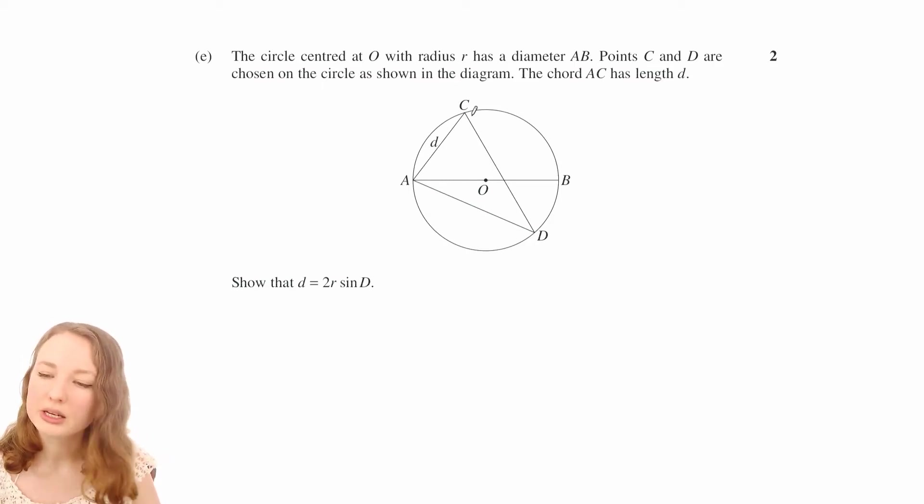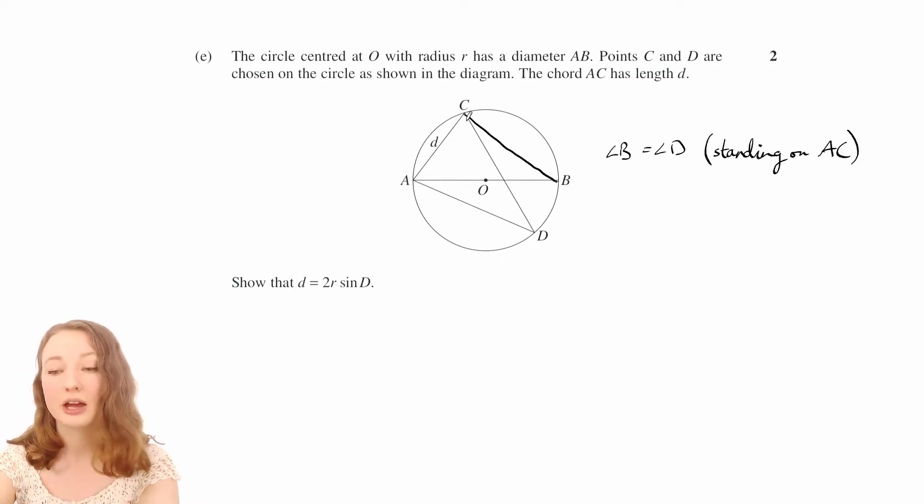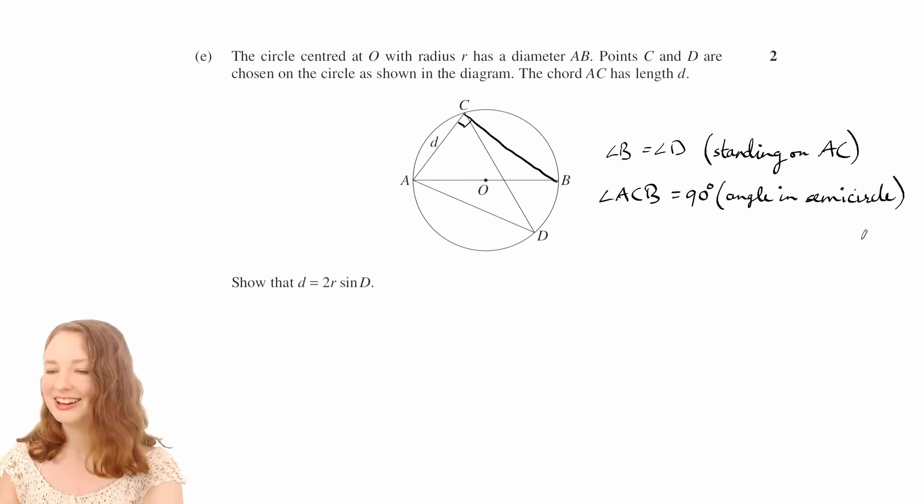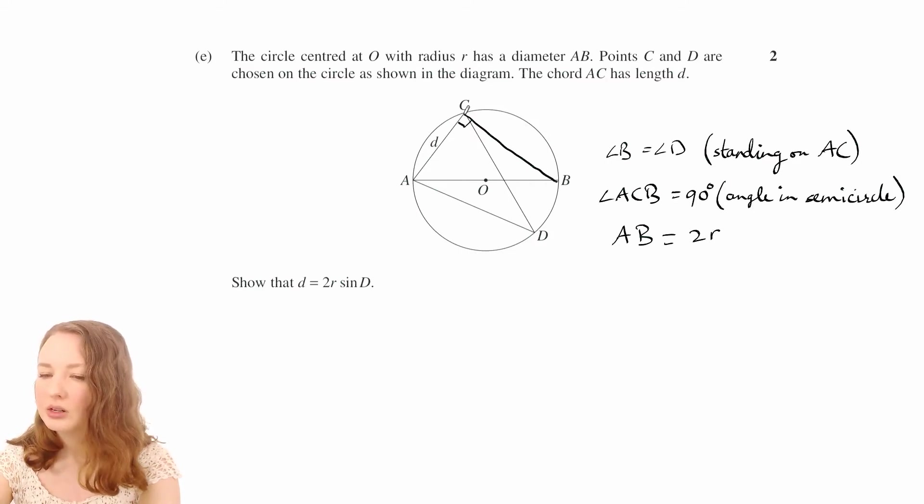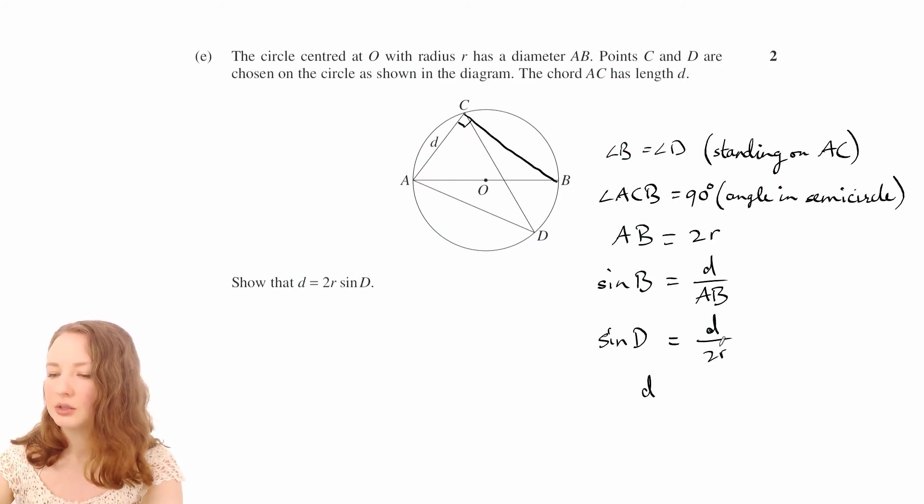So angle ABC, I'll just call that angle b, that's going to be equal to angle d, because they're both standing on AC. And then we can say that this angle, angle ACB, is 90 degrees, because it's standing on the diameter, or the usual way is that it's in a semicircle. And then you can say AB is 2r, because it's a diameter, and then just looking at that triangle, you can do sine of angle b is opposite over hypotenuse. And then, because we said angle b was angle d, you've got sine d is d over 2r. And then just multiply both sides by 2r.